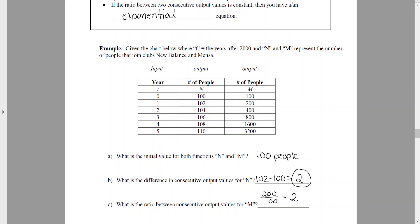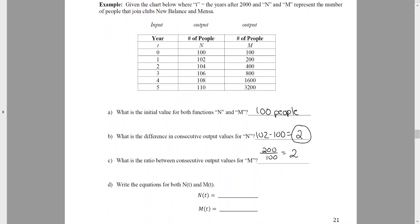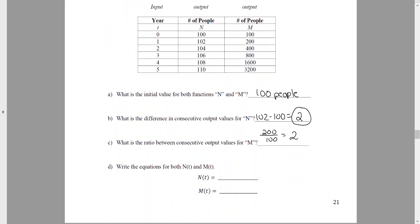So watch how this plays out in the next part here when we write our equations for both N of T and M of T. Because the difference was constant for our N values, that implies that that's going to be a linear equation. In other words, if I add 2 each time, that's going to take me to the next number. Whereas if I multiply by 2 to each of these, it's going to take me to the next number here. So remember our definition of linear versus exponential. And also remember what our general form is. For a linear equation, we're looking at Y equals MX plus B.